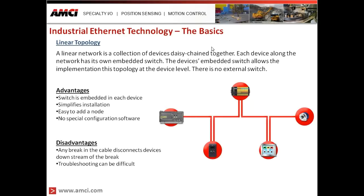The second network topology is a linear network. With a linear network, we have a collection of devices that are daisy-chained together. Each device along the network has its own embedded switch, which allows implementation of the linear topology at the device level — meaning there's no external device to connect to; everything is connected from device to device. The host controller sends messages out through its main port, and that message goes to a device — if that device is the intended recipient, it consumes it; otherwise, it passes it along the network. One advantage is that the switch is embedded in each device, eliminating the need for an external switch, simplifying installation, and making it very easy to add a node. There is also no special configuration software required.